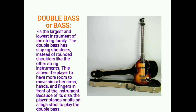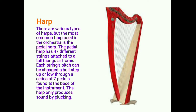The double bass is the largest and lowest instrument of the string family. It has sloping shoulders instead of rounded shoulders, which allows the player more room to move their arms, hands, and fingers. Because of its size, the player stands or sits on a high stool to play it. The most common harp used in the orchestra is the pedal harp, which has 47 different strings attached to a tall triangular frame. Each string's pitch can be changed a half step up or down through a series of seven pedals found at the base of the instrument.